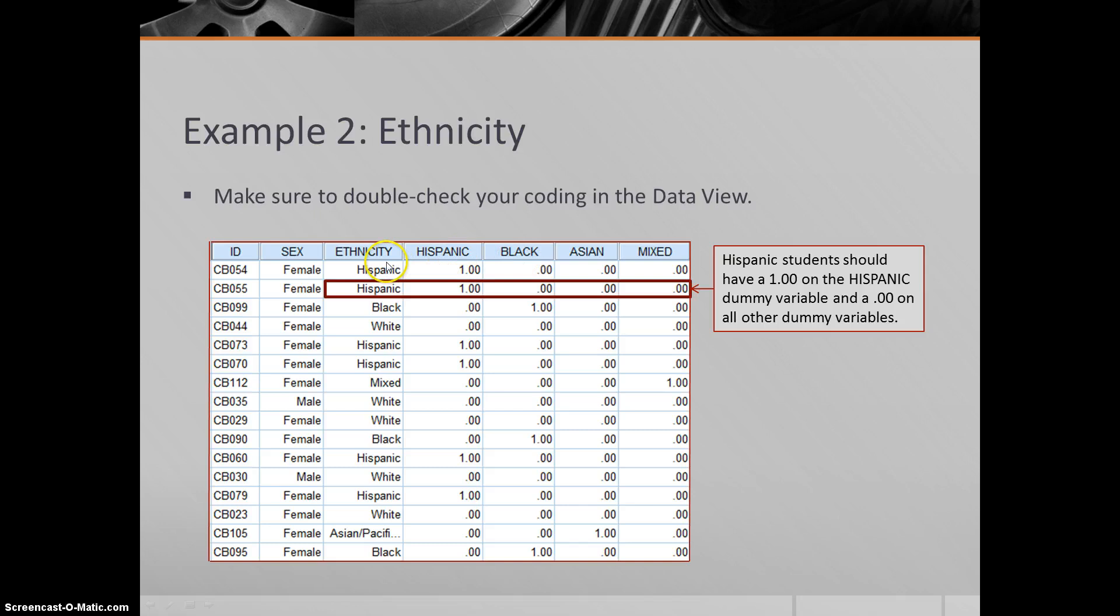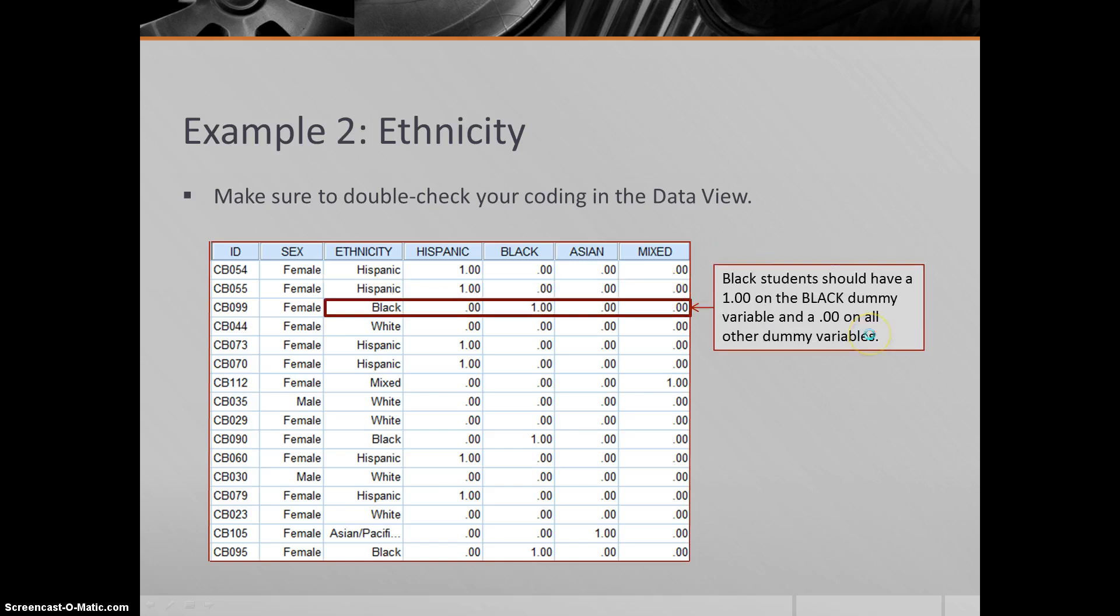What I did here is I put all four of my dummy variables side by side next to the ethnic group, and you want to double check to make sure it looks right. If you have an Hispanic student, you should have one under Hispanic and then zero, zero, zero. Because yes, this female, number 55, is Hispanic. She is not black, she is not Asian, and she is not of mixed ancestry. Right here, our black student: not Hispanic, yes black, not Asian, not mixed. So she'd have a number one on black and nothing else.